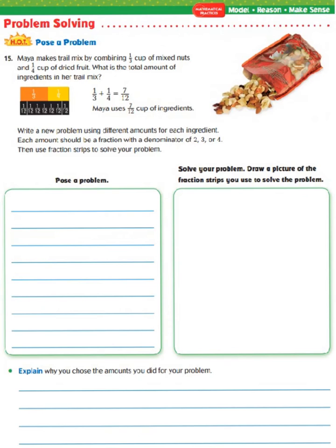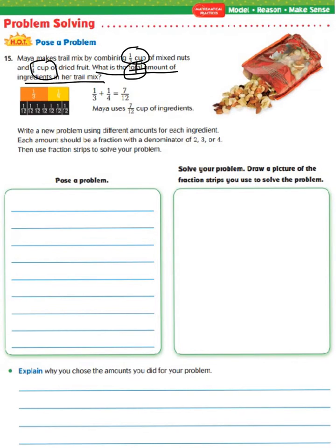Instead of notes today, we're going to take a look at our problem-solving question — one of our hot problems. Maya makes trail mix by combining one-third cup of mixed nuts and one-fourth cup of diced fruit. What is the total amount of ingredients in her trail mix? The first step is to determine what we need to find. The keyword here is 'total,' which typically means to add. Also, the word 'combining' means to add. So our equation is one-third plus one-fourth equals seven-twelfths.